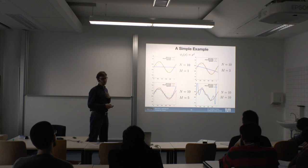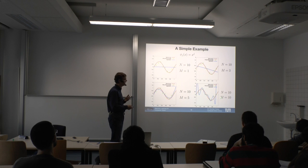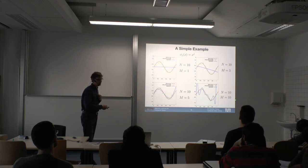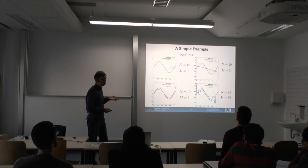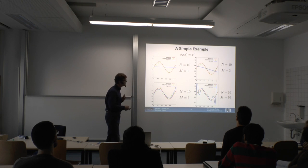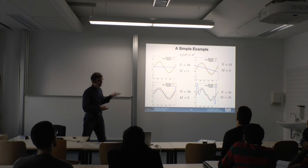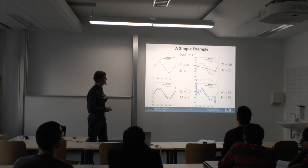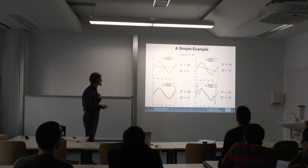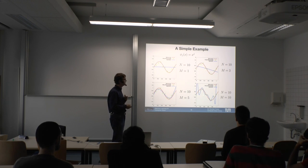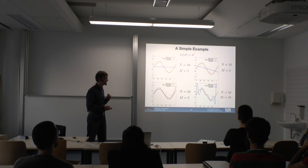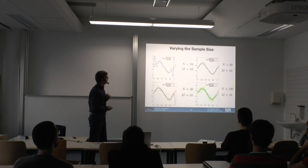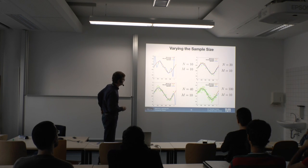The problem is knowing where to stop. If the model complexity equals the number of data points, every data point is perfectly fit by the blue curve — but this model is useless for prediction. If you sample a new 11th point, the prediction would be very bad compared to the ground truth. The model fits the training data perfectly but doesn't generalize — this is overfitting. We'll see later how to address this.